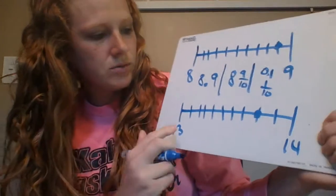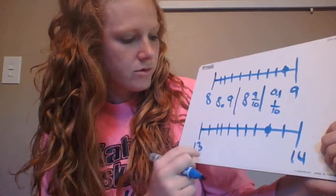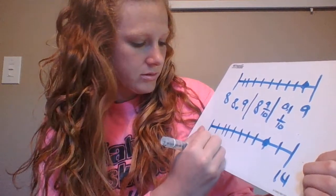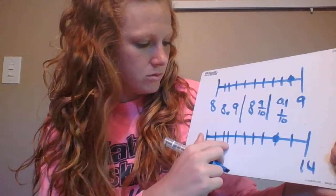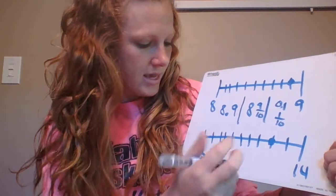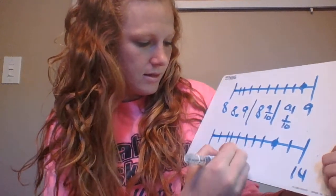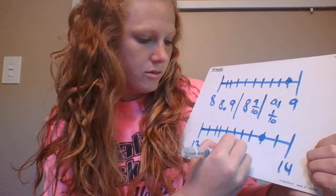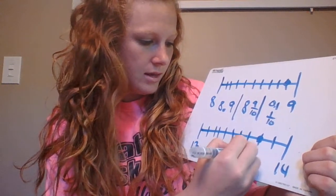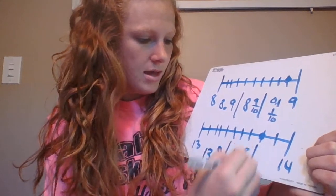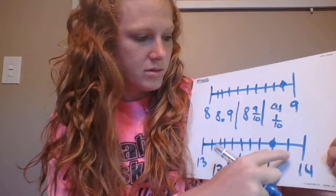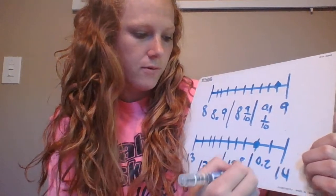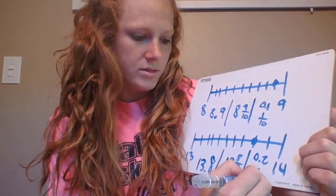Then the last one was a number line between 13 and 14. I know it's not yet 14, so it would be 13.8. If I wrote it as a fraction, I would write 13 and 8 over 10. And then how many more tenths to get to 14? So you could either write it as 0.2 or 2 over 10.